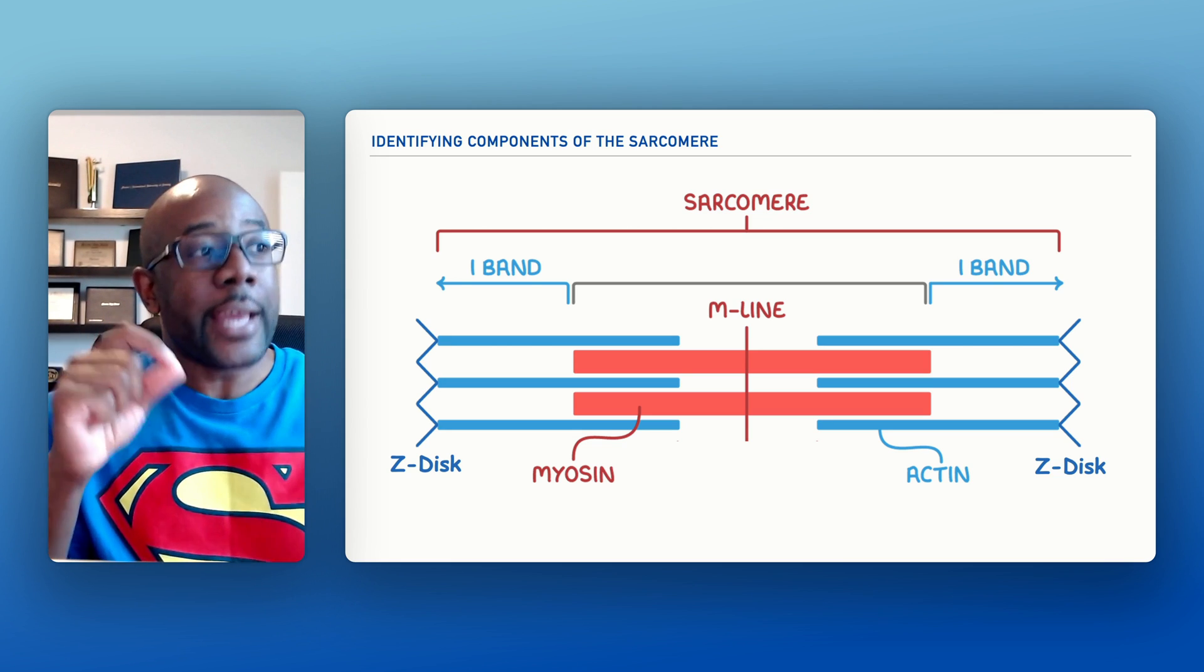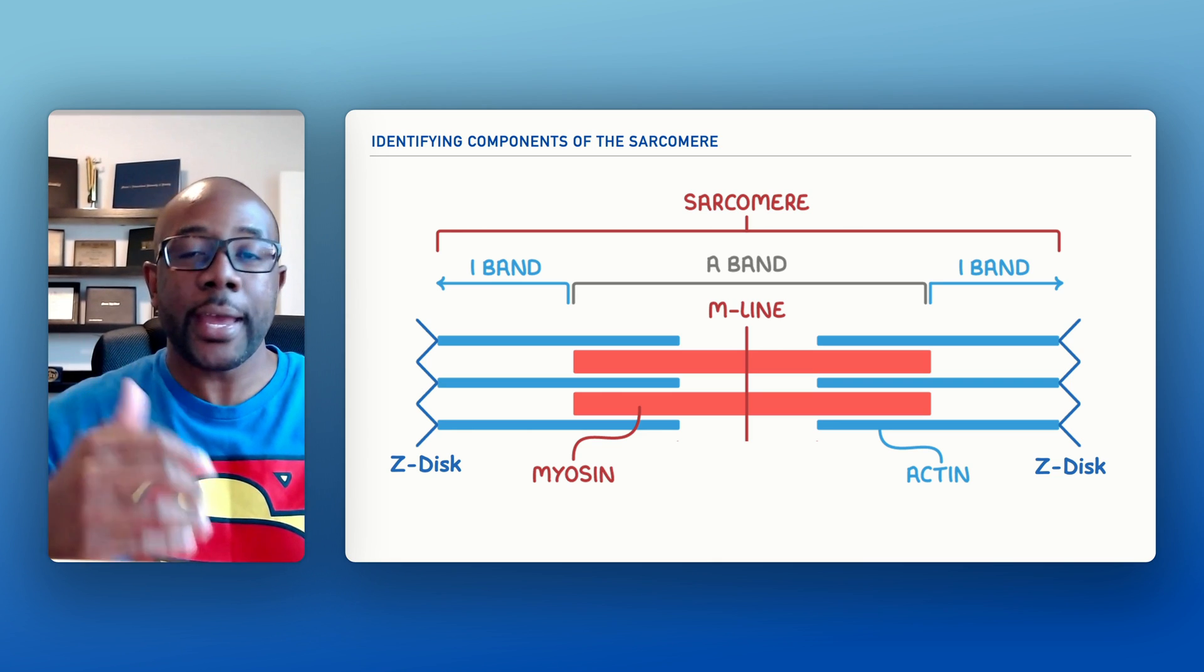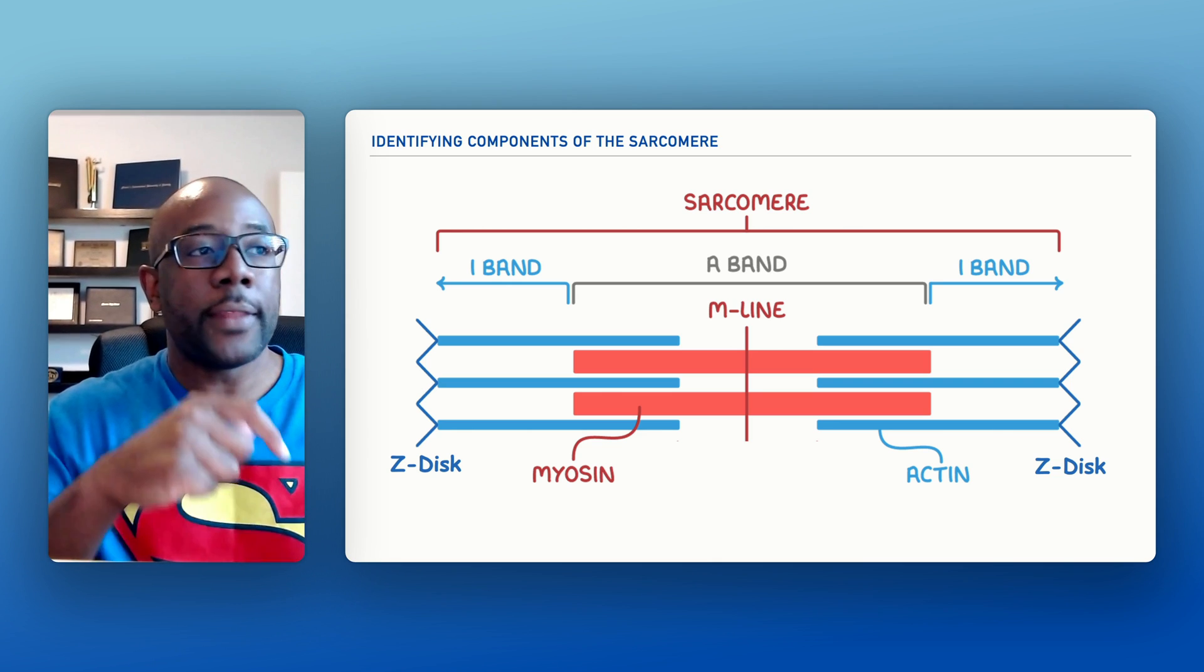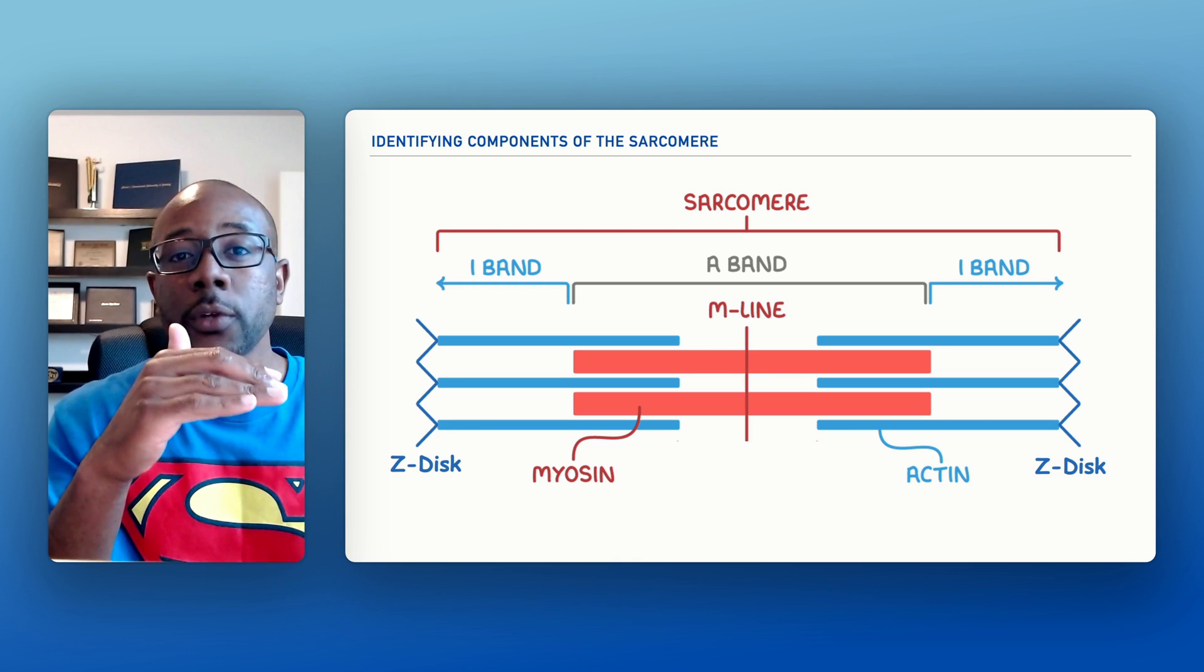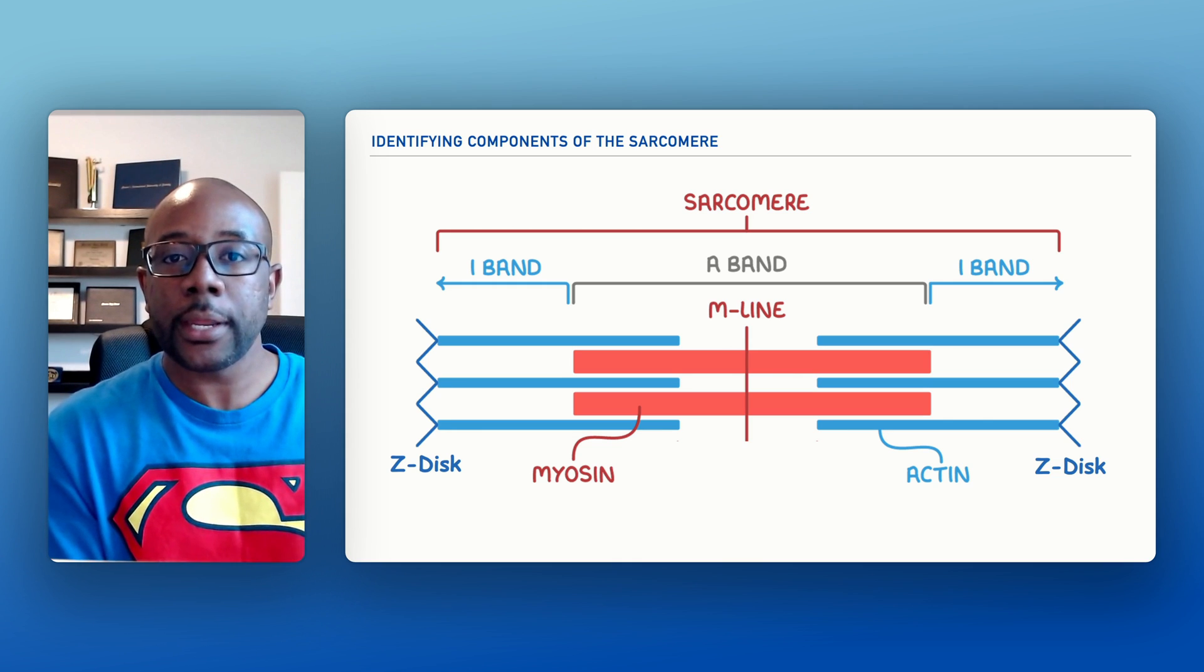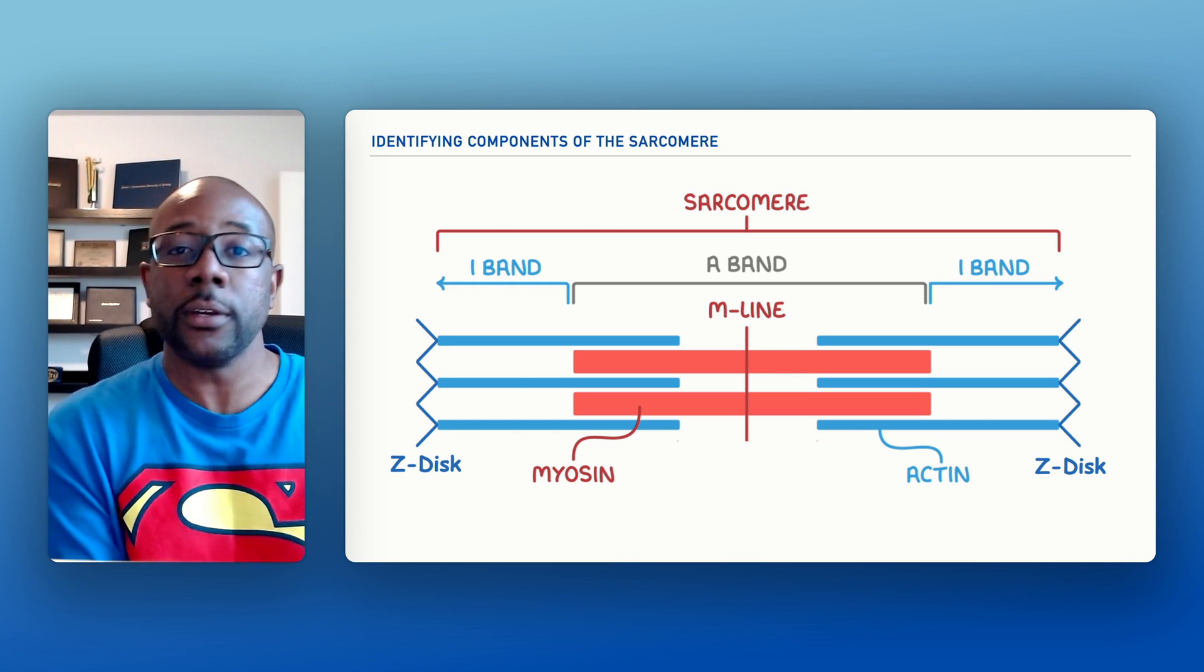The next thing that we'll showcase here is what we refer to as the A-band, and the A-band shows where there's overlap between our actin filament and our myosin filament.